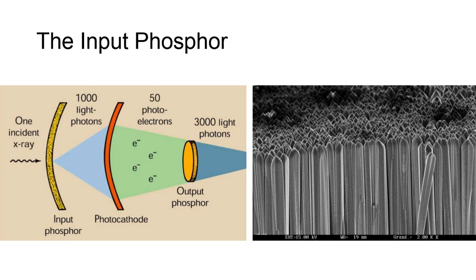Notice in the image on the left that one incident X-ray photon, after interacting with the input phosphor, is giving off 1,000 light photons. The efficiency of the input phosphor in converting X-rays to visible light plays a large role in radiation exposure reduction during fluoroscopic examination.